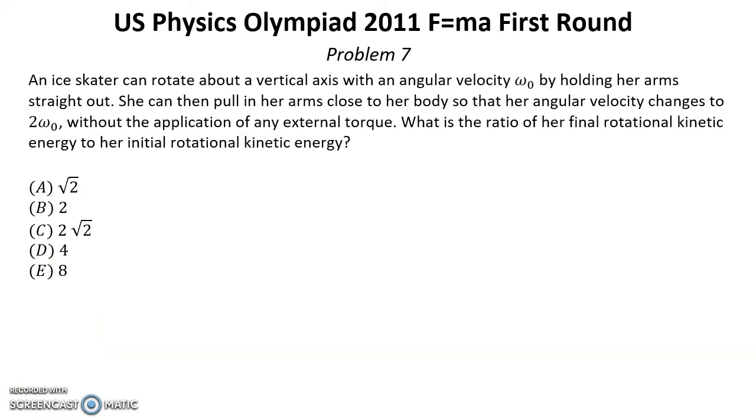Problem number seven. Solution for this problem you can find below this video in the reference of the description. An ice skater can rotate about the vertical axis with an angular velocity omega zero by holding her arms straight out. She can then pull in her arms closer to her body so that her angular velocity changes to two omega zero without the application of any external torque. What is the ratio of the final rotational kinetic energy to her initial rotational kinetic energy?